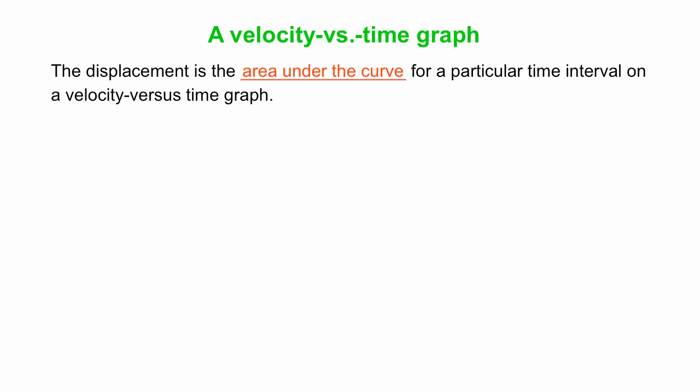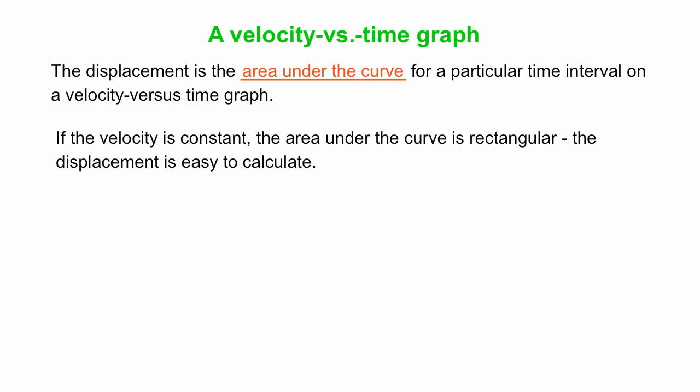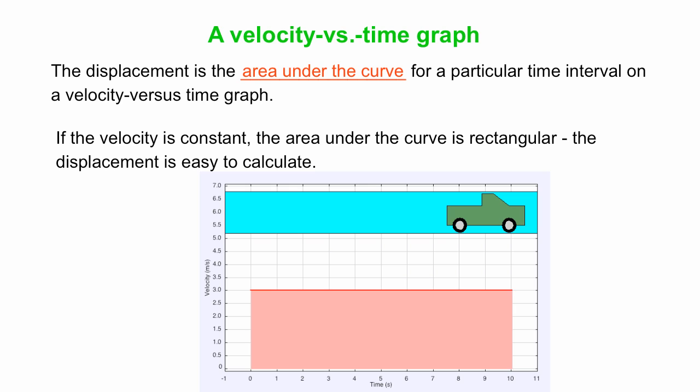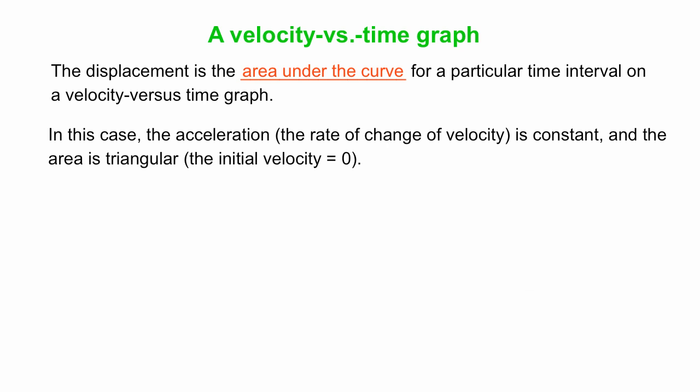What do the velocity versus time graphs look like for those two cases? Okay. So if velocity is constant, we get a nice rectangle as the area under the curve. Okay. So velocity here is constant at 3 meters per second. The truck does that for 10 seconds. You can find the displacement as the area under the curve, and it's a rectangle. So it's easy to find the area of a rectangle. Do the height, 3 meters per second, times the width, 10 seconds, 30 meters the truck moved.